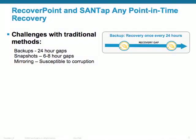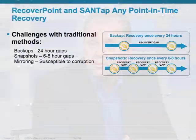If you compare RecoverPoint to traditional backup, traditional snapshot, and traditional mirroring environments, you get significant advantages. If you look at how a backup works today, you're essentially creating a full copy of data every 24 hours, which means you're going to have a gap of 24 hours when you can recover data. To minimize that gap, you could use snapshot technology, which minimizes the recovery gap from 24 hours to six or eight hours.